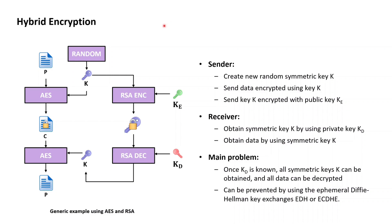The best of both worlds can be combined into a hybrid encryption scheme, where each participant — let's call her Alice — is required to own a public-private key pair, for example an RSA key pair. If Alice has such a key pair and has made the public key publicly available, then Bob, who wants to confidentially send Alice a plaintext, proceeds as follows. In a first step, Bob creates a completely new random symmetric AES key K of an appropriate length, for example 128 bits.